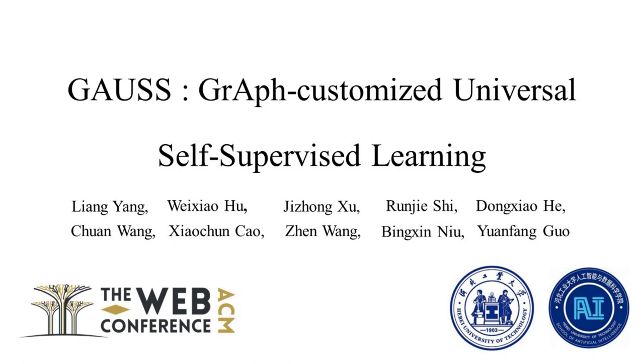To make graph neural networks, GNNs, meet the requirements of the Web, universality and generalization become two important research directions.